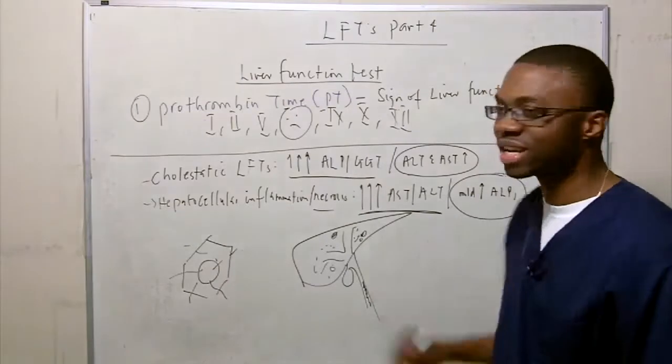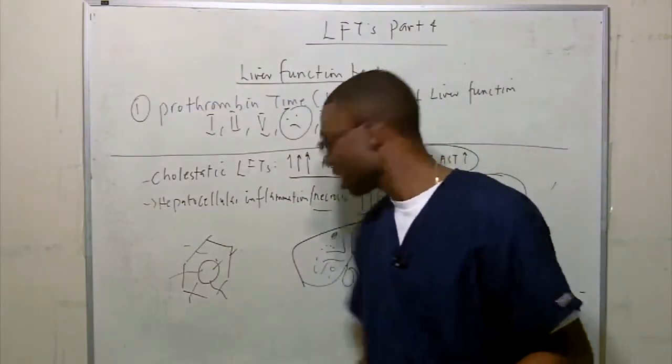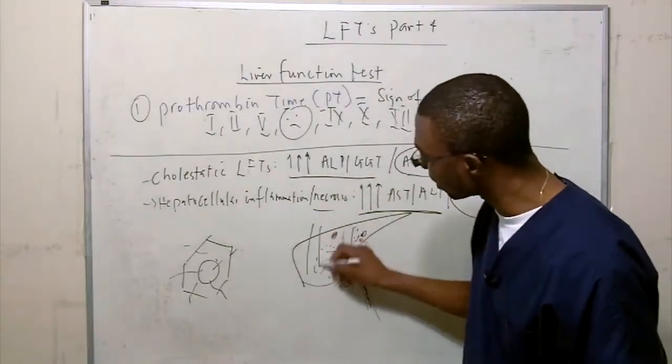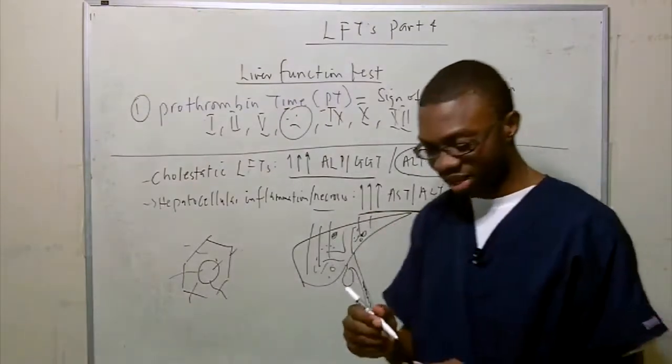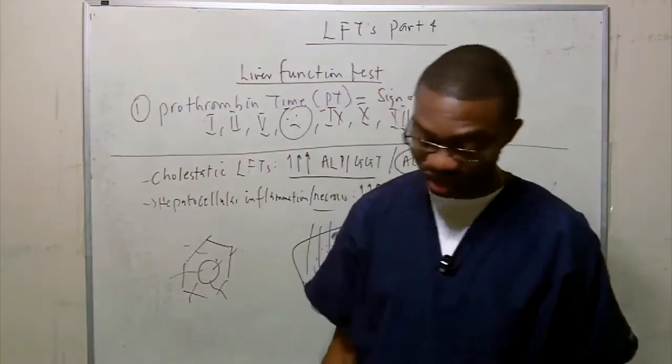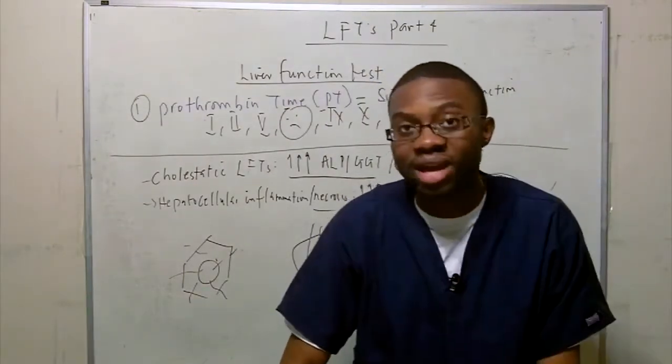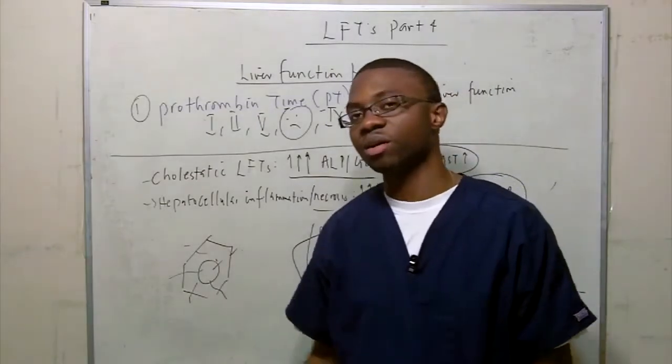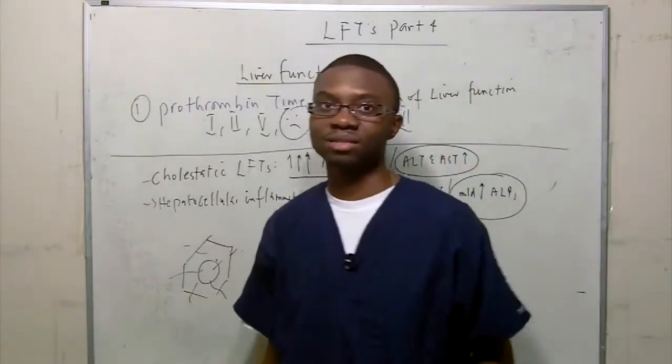But, you might see slight elevation ALP, which is the alkaline phosphatase, but most of the problem is coming from the liver at that point because it's getting inflamed, you're going from a virus, a drug infection, a drug reaction, or some sort of whatever pathology is affecting the liver.